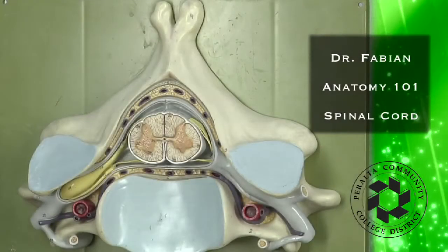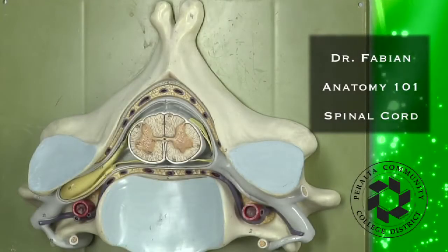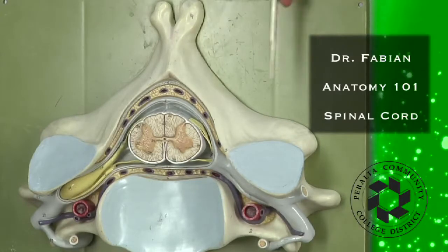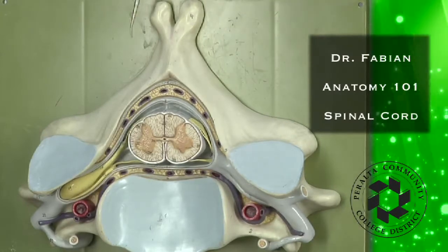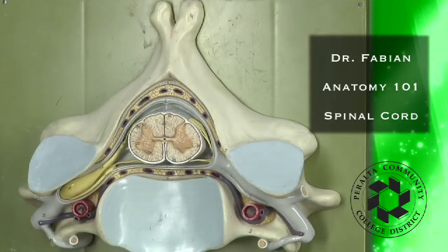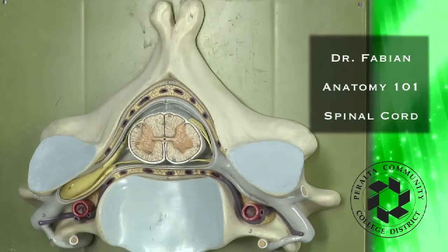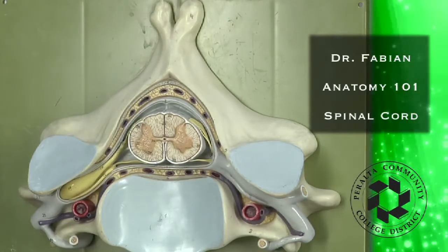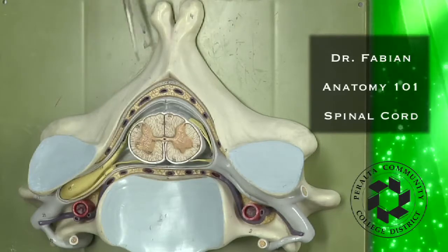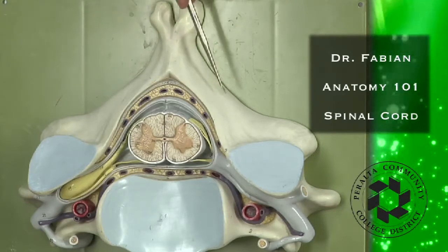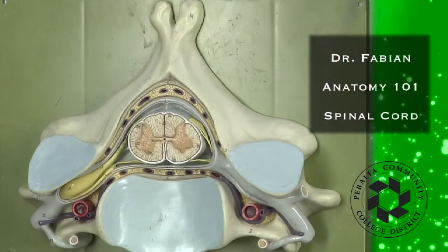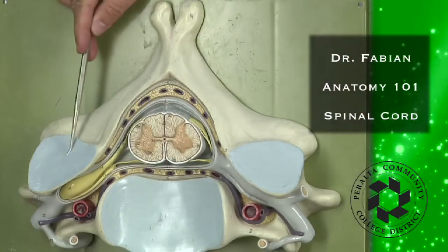Today we're going to be talking about the spinal cord. In order to figure out where the spinal cord is, we have to first look at the vertebrae. This is a cervical vertebra, and we know that because of the bifurcation here. That's the spinous process, these are the lamina, and these are the superior articular surfaces here and here.